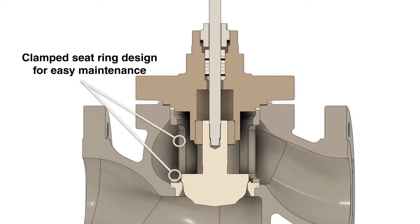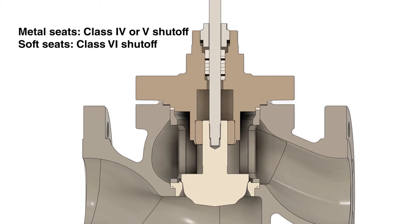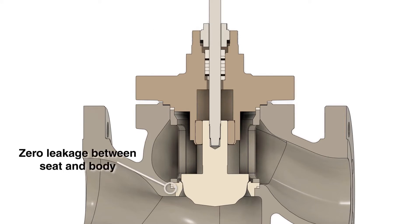Seat retainer clamps on the seat ring with no threads for easy removal. Standard shutoff that's better than class 4 and no lapping required. Zero leakage between the seat and body for less maintenance.